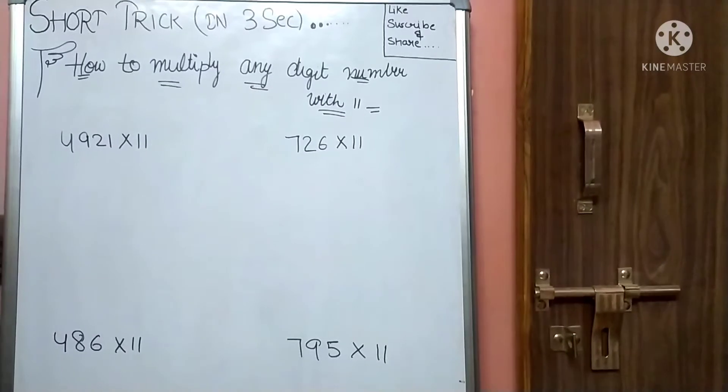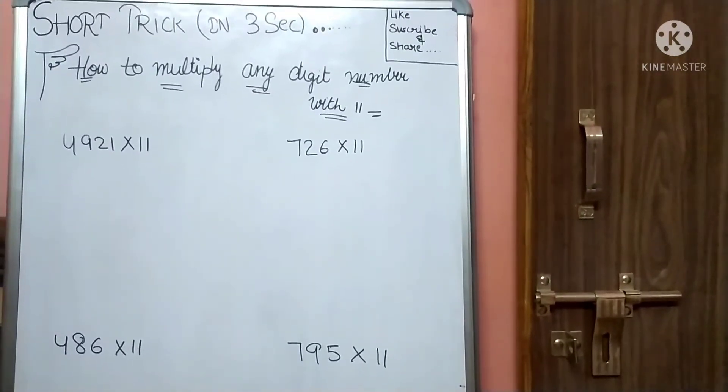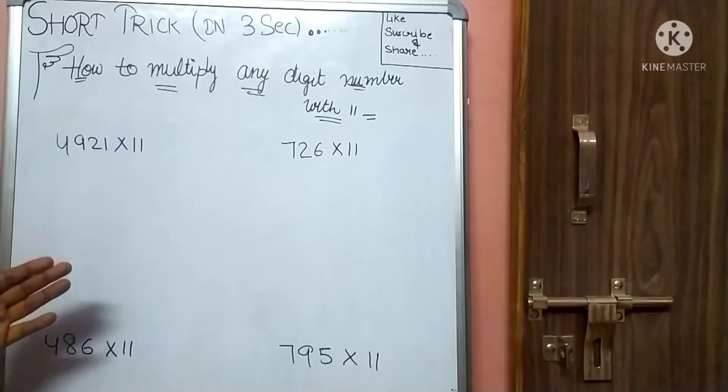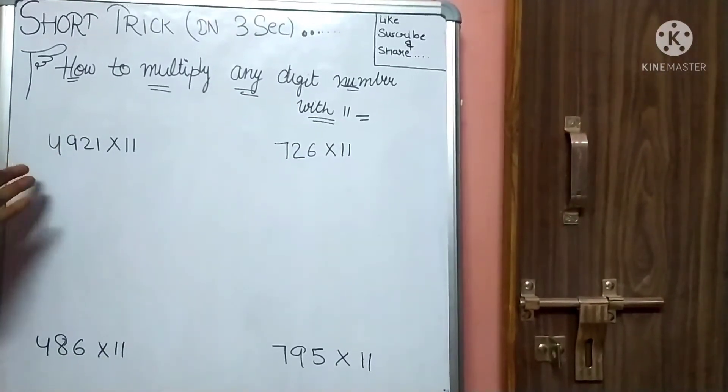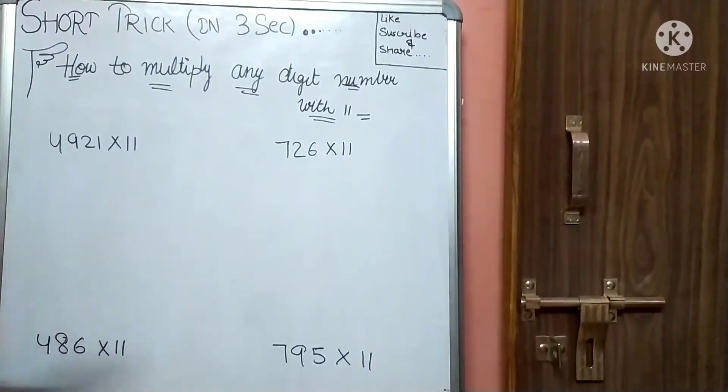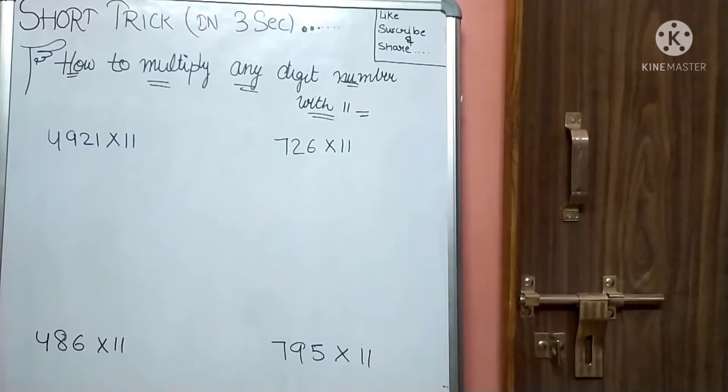If we multiply, if there is 3-digit or 4-digit, we will learn a short trick. The number is 11, but there is 4 or 5 digits, so we can apply this method for each. Let's start with the first example.